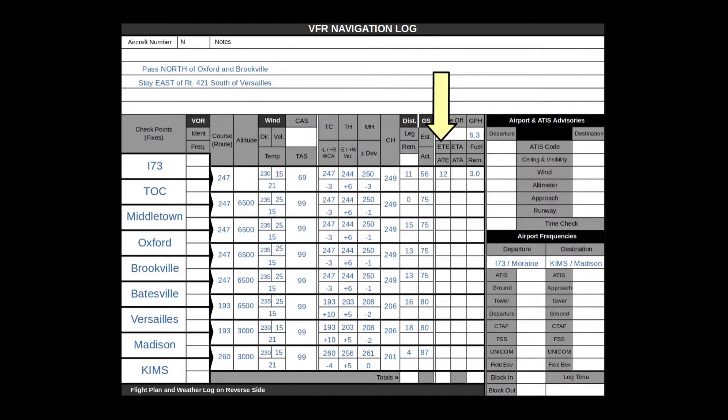Computing the estimated time between checkpoints is a simple matter of dividing the distance by the ground speed and then multiplying by 60 to get minutes. The fuel burn per leg is the leg time in hours multiplied by the fuel burn per hour. Totals are self-explanatory and should be sanity checked to make sure they seem reasonable.